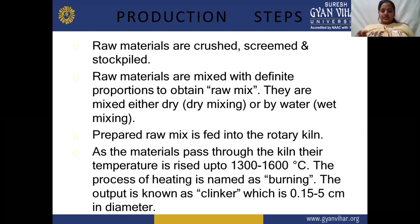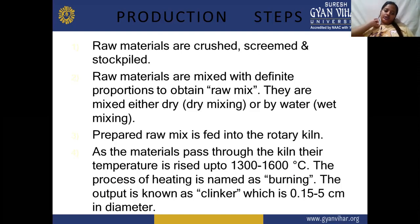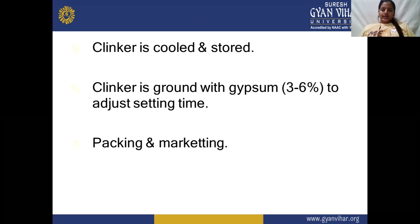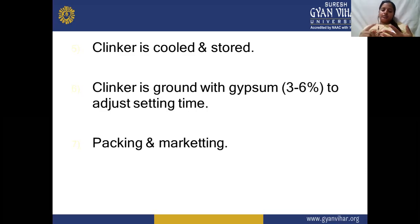The prepared raw mix is fed into the rotary kiln, and as the material passes through the kiln, their temperature is raised to 1300 to 1600 degrees Celsius — the process of heating is named burning. The output is known as clinker, which is 0.15 to 5 cm in diameter — small chunks of rock combining all the raw materials added. The clinker is cooled and stored, then ground with gypsum. Gypsum is added at an average of 3 to 6% to adjust the setting time, giving initial and final setting time. The product is then packaged and marketed for construction.